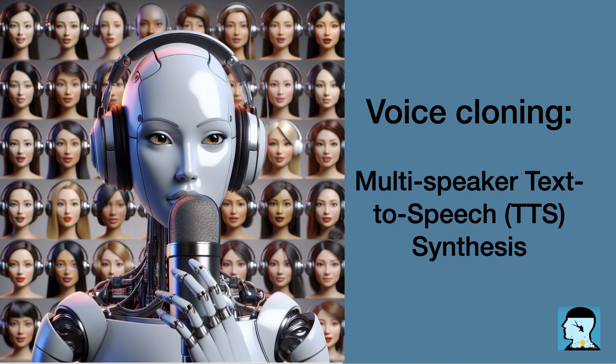Could you explain how the sequence-to-sequence architecture and the neural vocoder model work together to generate natural-sounding speech? How do these models take the encoded voice characteristics and transform them into speech?